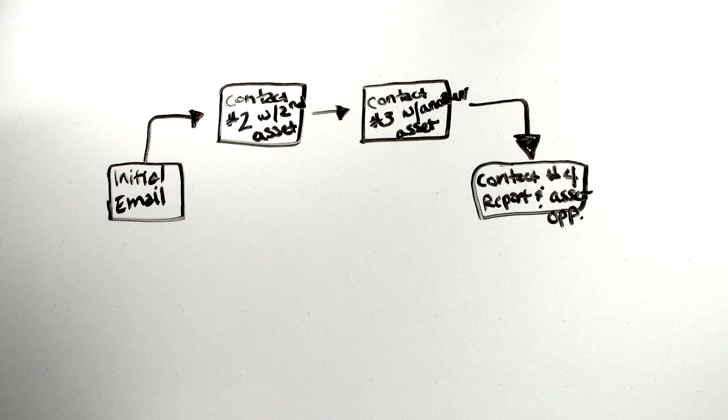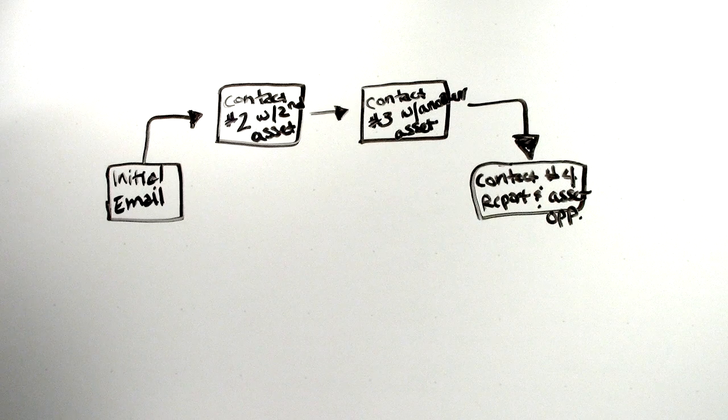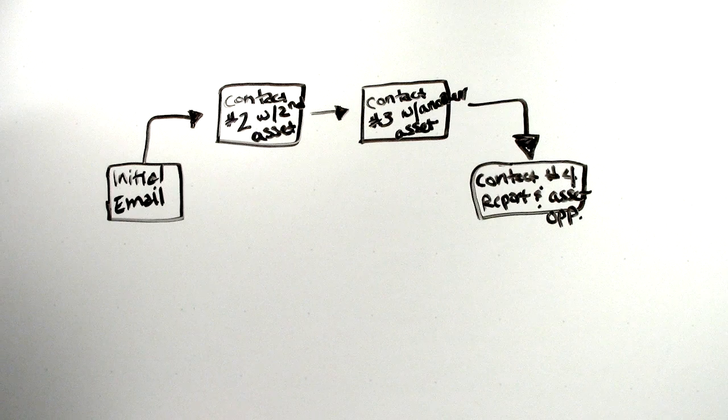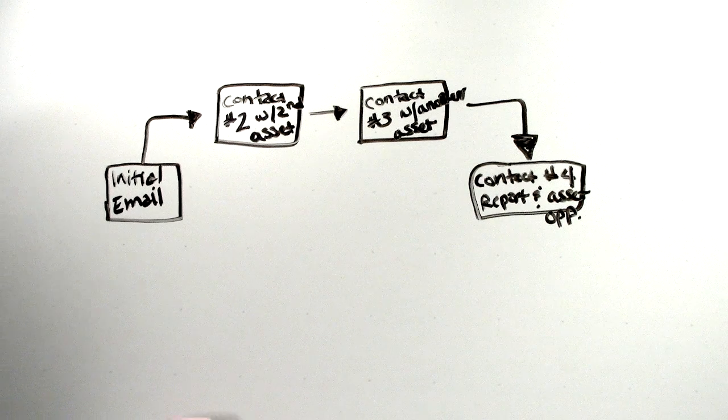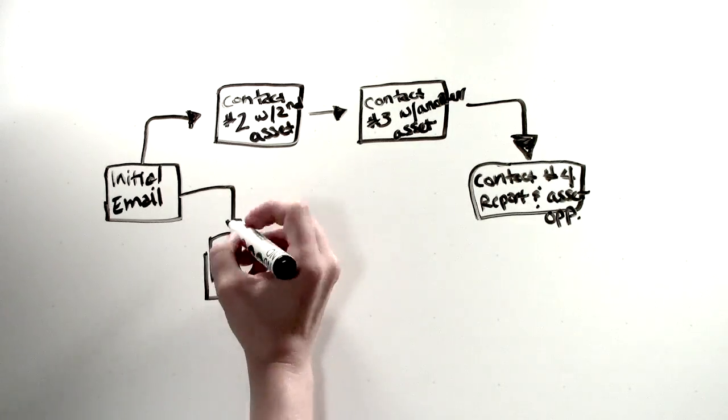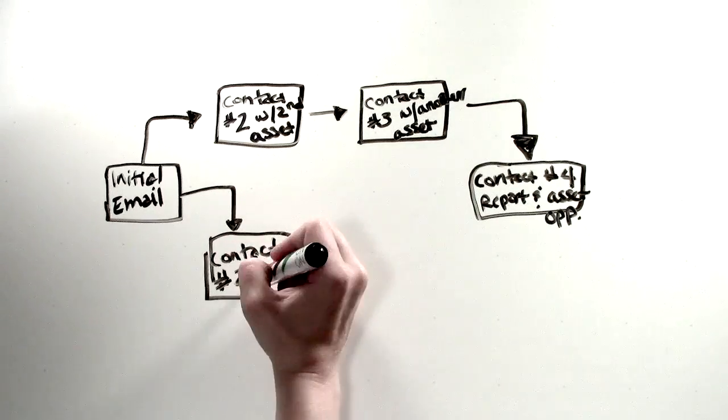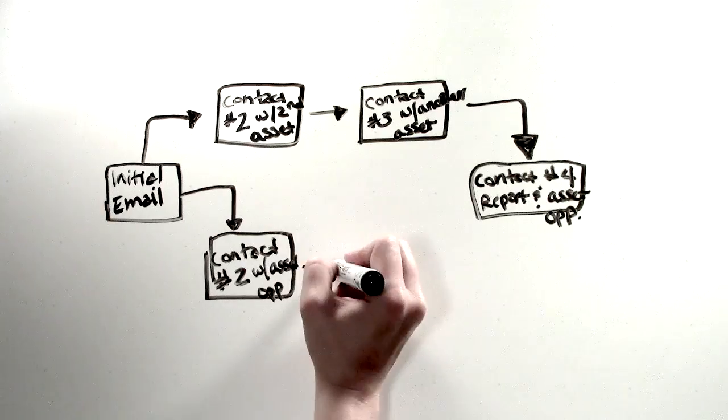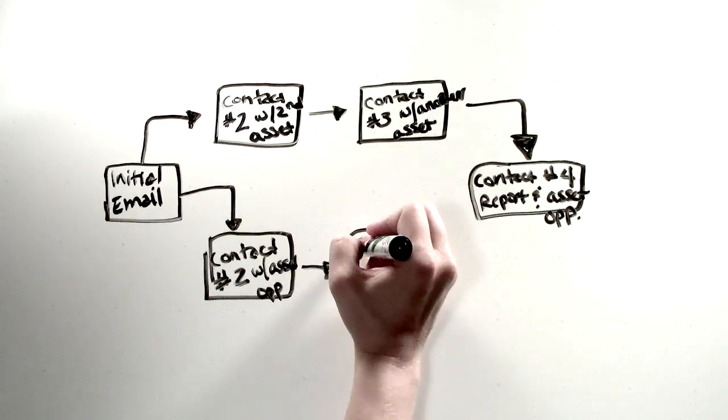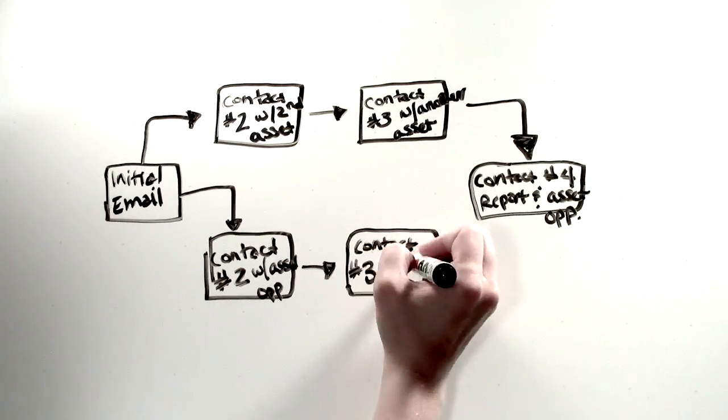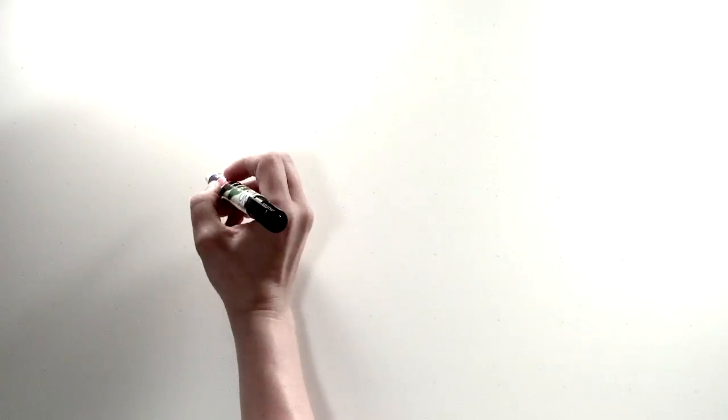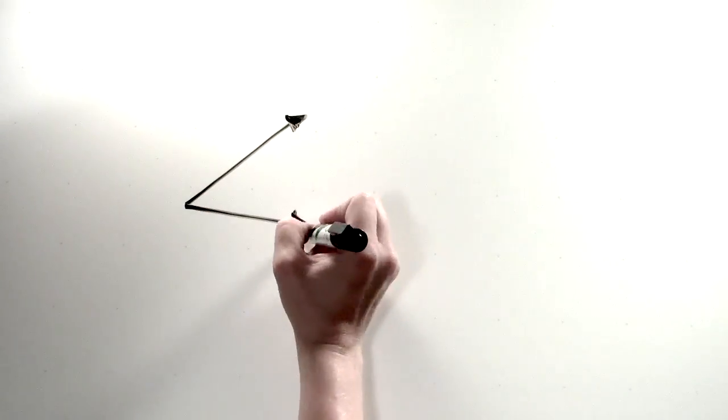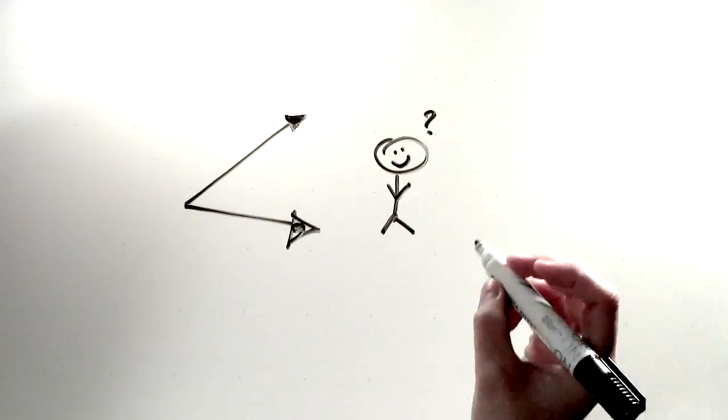But almost no one will download all four assets, so let's take a more realistic approach. We send the initial email and they don't download the asset. Maybe 10 days later, we send a second email with another asset that they also don't download. Three to six weeks later, it may be decided to send a third and fourth email, which may or may not result in a download. But regardless, through these multiple engagements, or the lack thereof, the type of prospect can be determined.